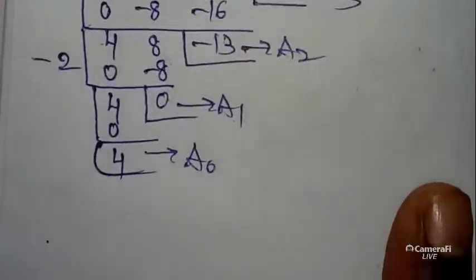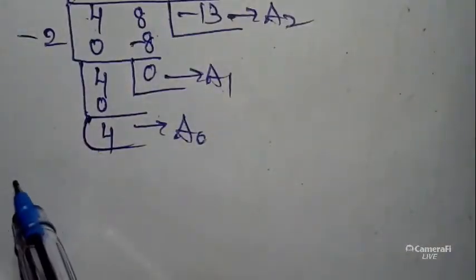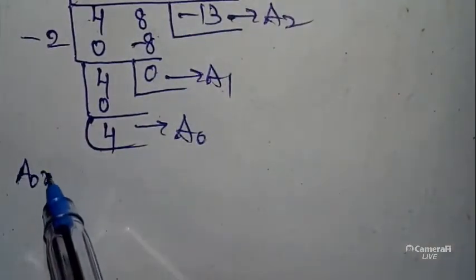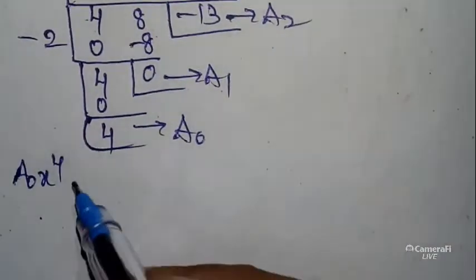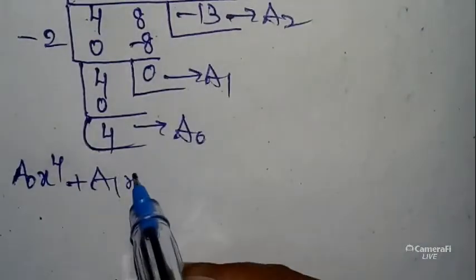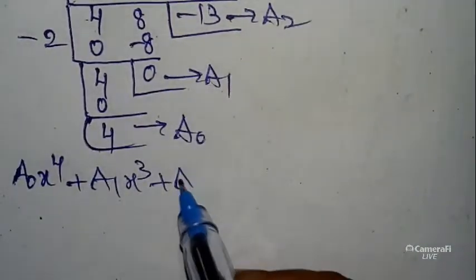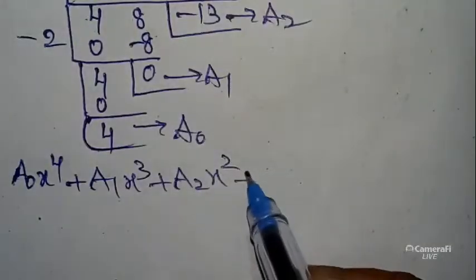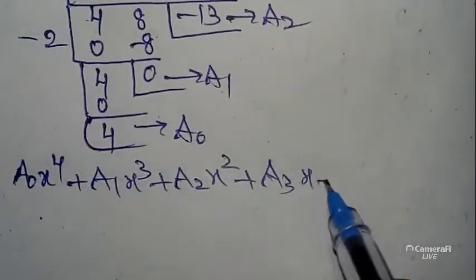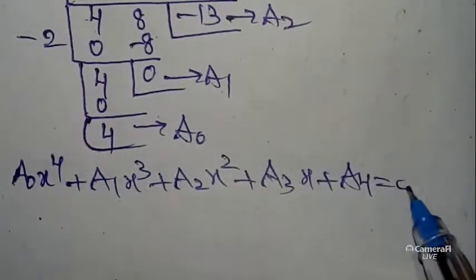Once you check it, highest degree is 4, x⁴. We are getting A₄. So to get the polynomial equation, you can write: A₀ × x⁴ + A₁ × x³ + A₂ × x² + A₃x + A₄ = 0 is our required polynomial equation.